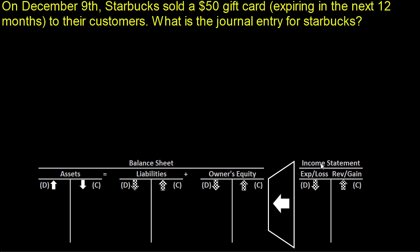What is the journal entry for Starbucks? With this transaction, everybody's had one of these gift card things. If you're Starbucks, we always start with things we can touch. What we can touch is cash. So we received cash of $50. The way we got there is our assets — when we debit assets, it shows an increase — and cash was given to us, Starbucks, so we had an increase of $50.